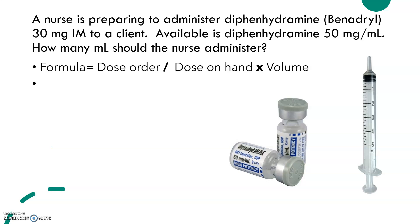Let's read the question. A nurse is preparing to administer Benadryl 30 milligrams IM, which is intramuscular, to a client. What's available is 50 milligrams per ml. How many ml should the nurse administer? The formula for that is dose order over dose on hand times the volume.